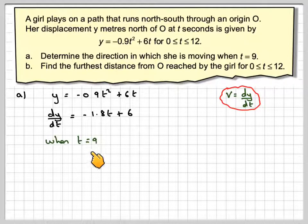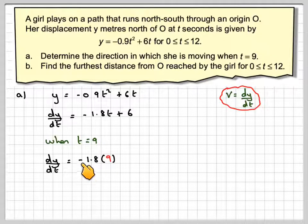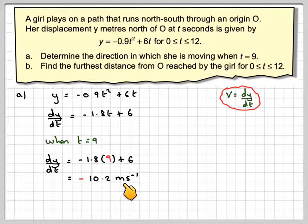So when t equals 9, we substitute that in. dy/dt gives me minus 1.8 times 9 plus 6, which gives me a value of minus 10.2 metres per second. We're only really interested in the sign, and as it is negative, it means that the girl is walking due south. If this was positive, the girl would be walking due north.